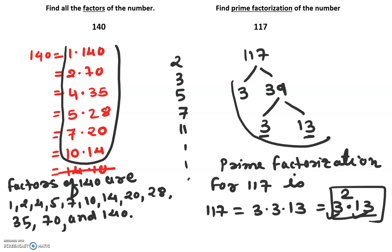We don't care what the exponent is — exponents don't need to be prime. But this is the prime factorization for 117. Remember: 9 times 13 is not a prime factorization — why? Because 9 is not a prime. Hope this helps you.